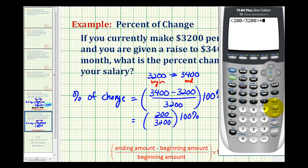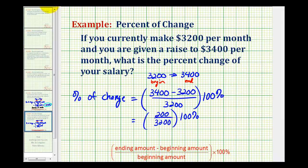And then we can multiply by 100, but we'll have to include the percent symbol on our own. So this product is 6.25, which means the percent of change is 6.25 percent.